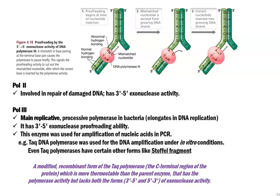DNA polymerase 3 is the main replicative processive polymerase commonly present in bacteria. It is involved in elongation of the DNA molecule during replication and also possesses 3'-to-5' exonuclease proofreading ability in addition to polymerase activity.